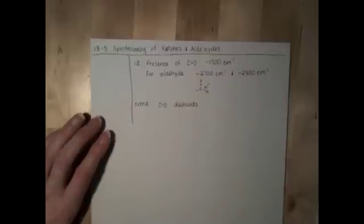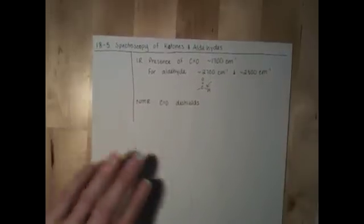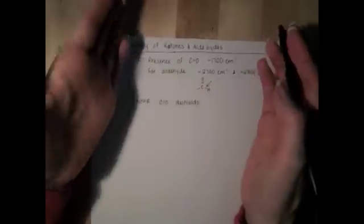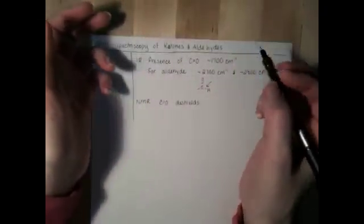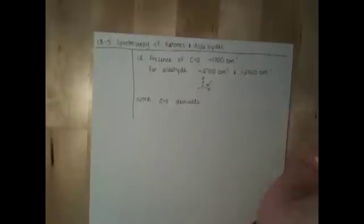And this is going to be the case for both proton and carbon NMR. The closer the carbons or protons are to the carbonyl group, the more deshielding we'll see.